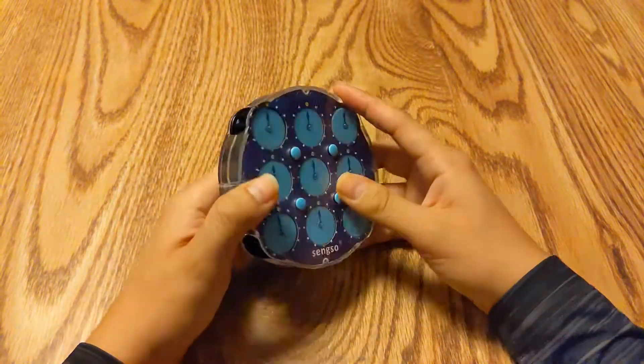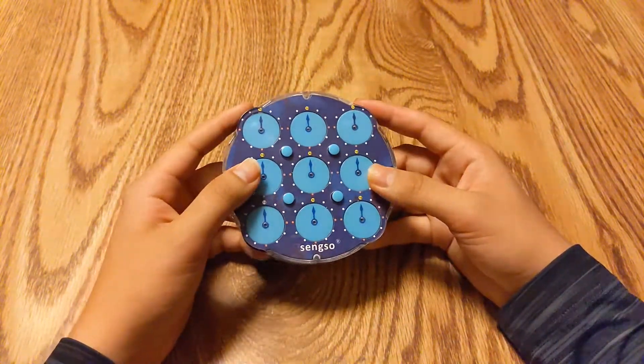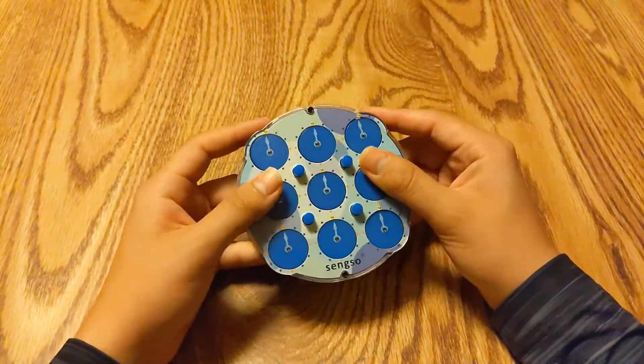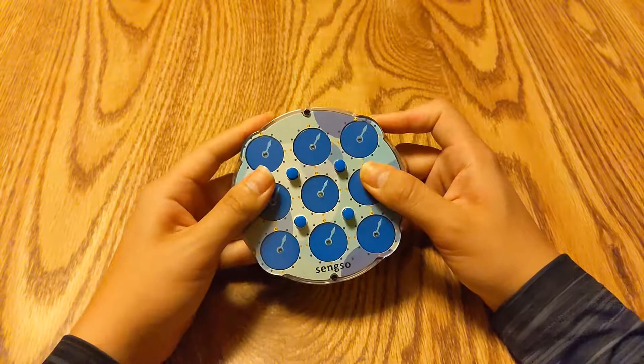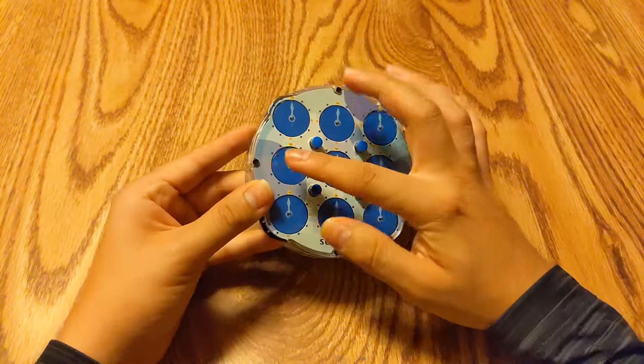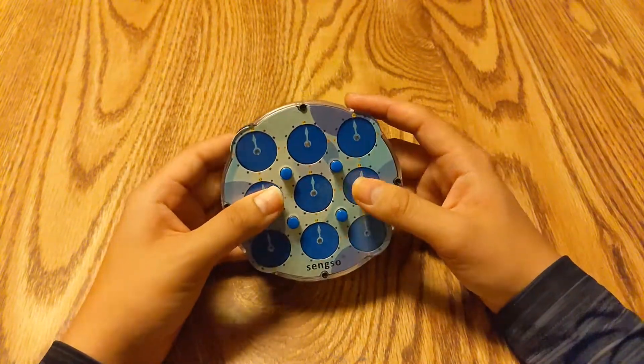So this is the Shengshou Magnetic Magic Clock. Out of the box, it's a little rough but I like that you can get into it pretty easily with these screws so that's cool.